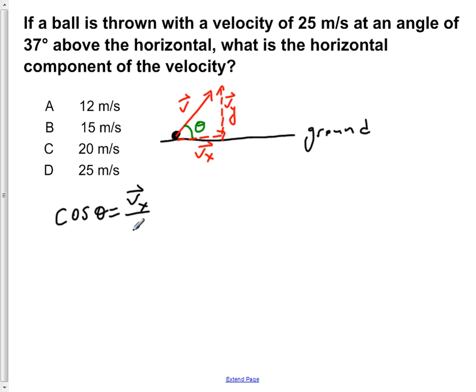So if we multiply both sides by v, we would get vx is equal to v cos theta. Now to solve for vx, we just simply plug in the given values we have for v and theta.